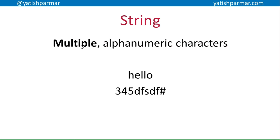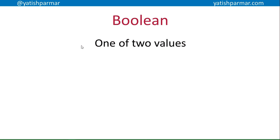Data type number four is strings — multiple alphanumeric characters. For example, text like 'hello', something that could be your password, or that telephone number I mentioned earlier. If I sent you to the shop to buy '02 oranges', you'd know that '02' is a quantity — an integer — and the leading zero is meaningless, so you wouldn't store it with the leading zero. That's why telephone numbers are actually strings.